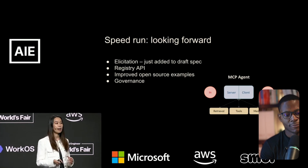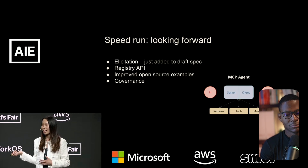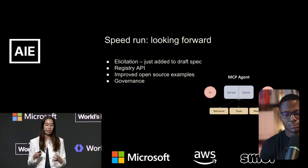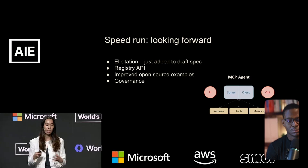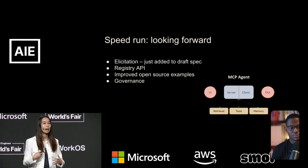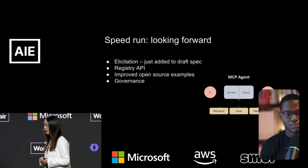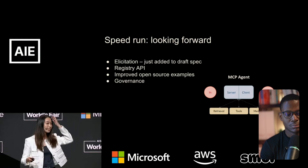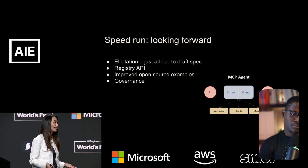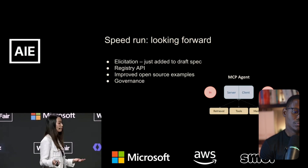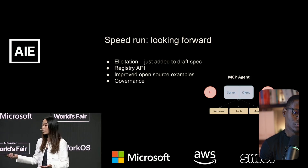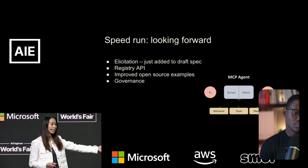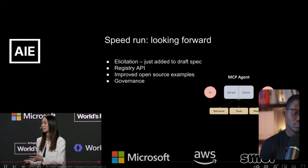Looking forward, they're focusing a lot more on the agent experience. They just added elicitation to the draft spec, which allows servers to ask for more information from end users. For example, if you're building a flight booking tool and the end user says 'book me the best flight to Atlanta,' the server can ask what 'best' means — cheapest or fastest — and pass that elicitation back to the end user for a response.